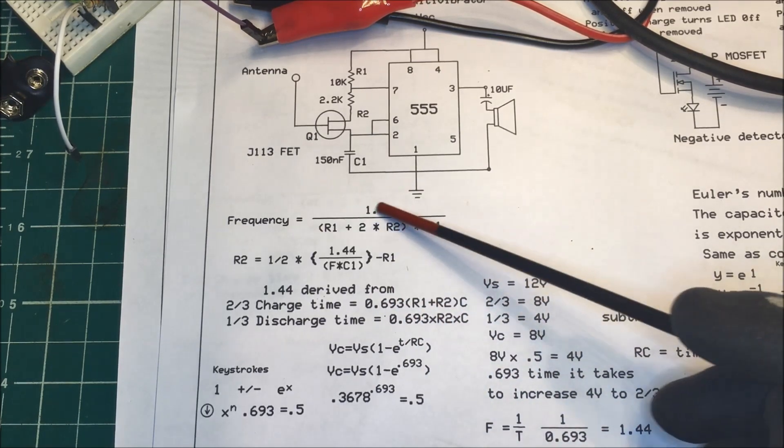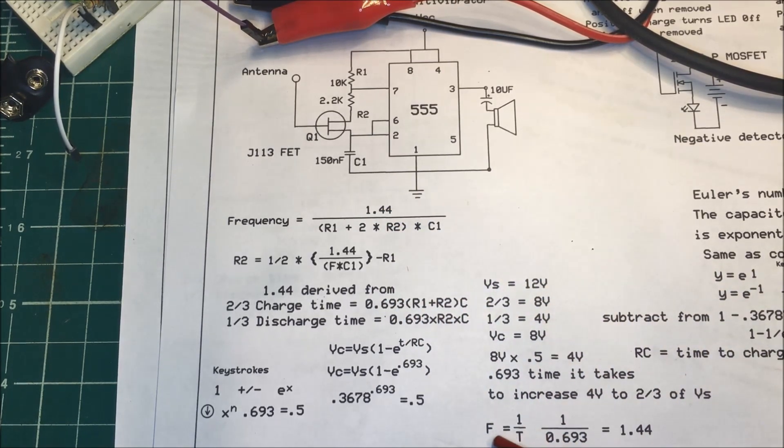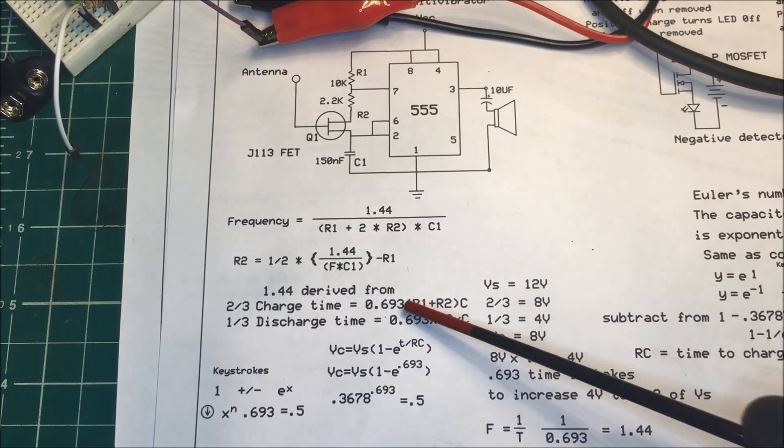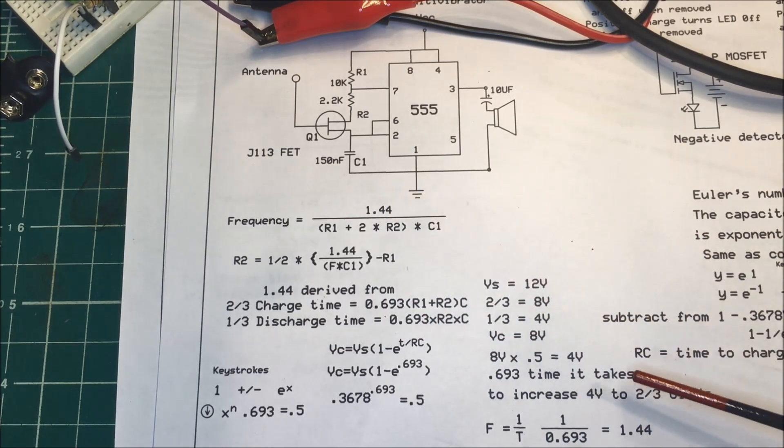And this 1.44, and that's just because we want our frequency, so if we just take the reciprocal of that it comes out to 1.44. So that's how the 555 timer works and that's why we use these numbers here instead of our normal 63%.